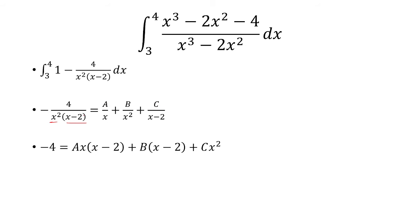So we're going to have to multiply both sides by x squared times x minus 2. So on the left, we're going to have negative 4 left over. And on the right is ax times x minus 2 plus b times x minus 2 plus c times x squared.